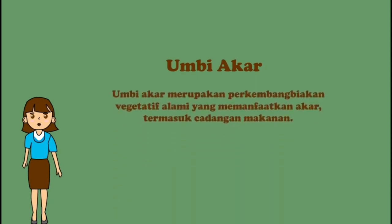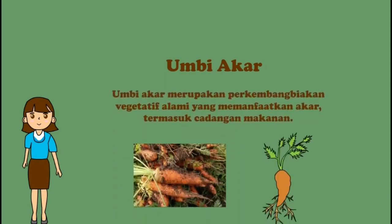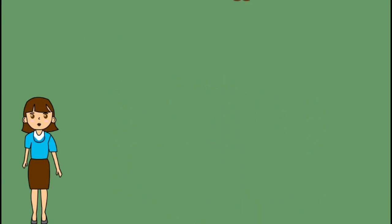Yang keenam, umbi akar. Umbi akar merupakan perkembangbiakan vegetatif alami yang memanfaatkan akar termasuk cadangan makanan. Umbi akar ada dua jenis, yaitu berserat dan akar tunggang. Contoh tanaman yang berkembang biak pada umbi akar berserat adalah singkong, sedangkan umbi akar tunggang antara lain lobak dan wortel.